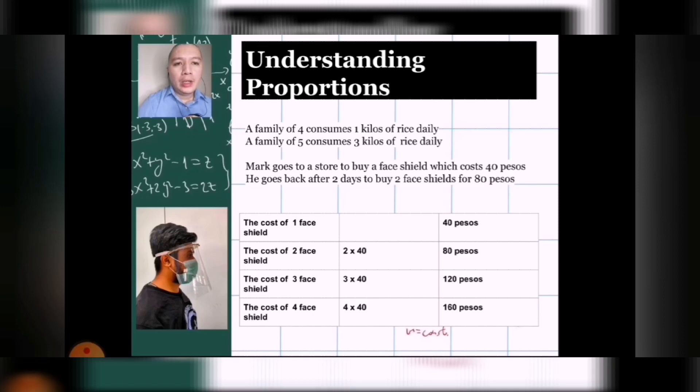A family of four can consume one kilo of rice daily and then a family of five will consume three kilos of rice daily. Let's inspect this statement. Take note that when the family has started to increase its headcount, the number of kilos of rice being consumed daily also increased. You can also look at the second statement wherein Mark goes to a store to buy a face shield which costs 40 pesos. And then he goes back after two days to buy two face shields which now costs 80 pesos. Now let's try to translate that in a tabular form.